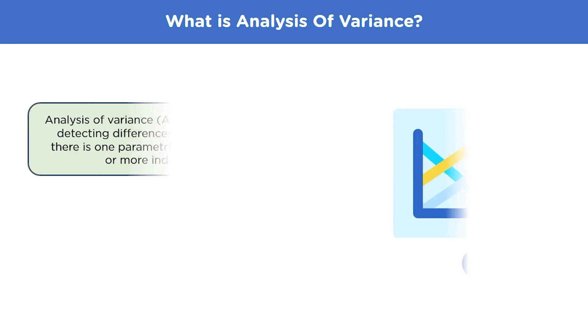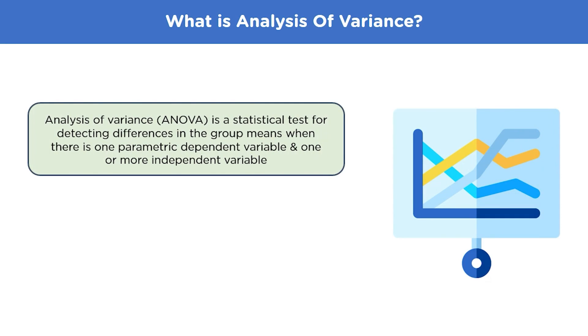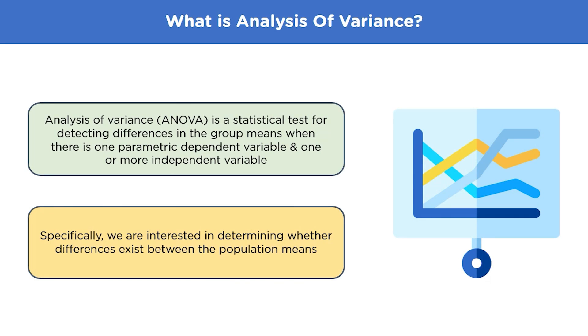ANOVA is to test the differences among the means of the population by examining the amount of variation within each sample, related to the amount of variation between the samples. This technique was invented by R.A. Fisher and is thus often referred to as Fisher's ANOVA.